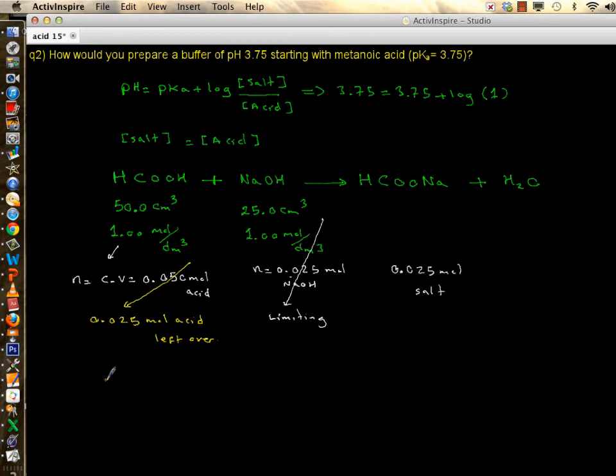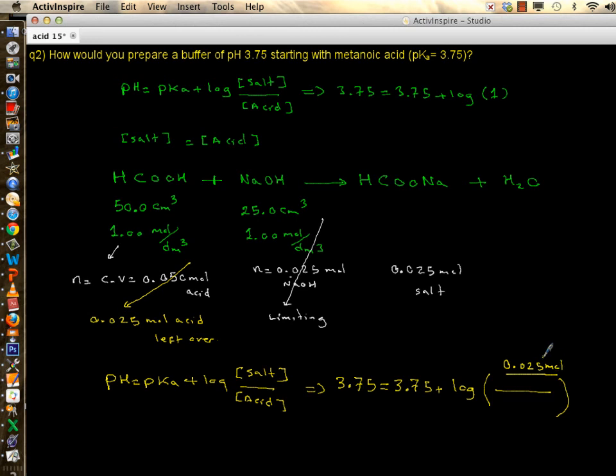Now this is a perfect situation because in this case pH is equal to pKa plus log of salt over acid. So pH was 3.75 that we wanted. pKa was 3.75 plus log of... now we are hoping this is log of one, the ratio is one. Concentration of the salt is moles of the salt divided by the total volume. Total volume is sum of 25 and 50, which is 75 cm³ or 0.075 dm³. So this is concentration of your salt.